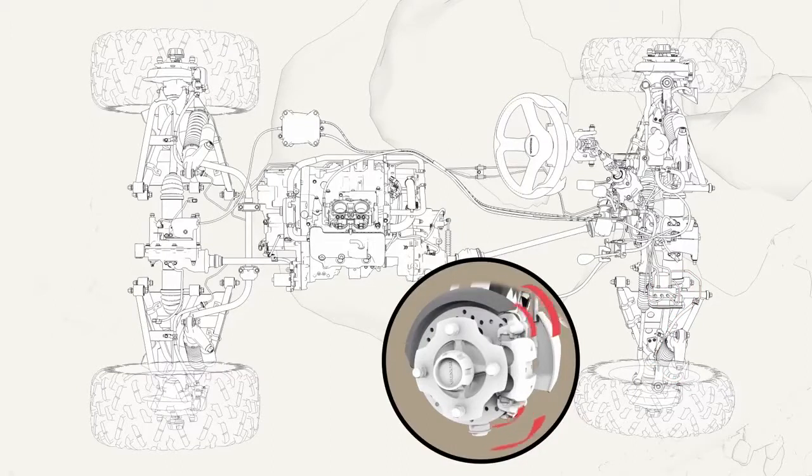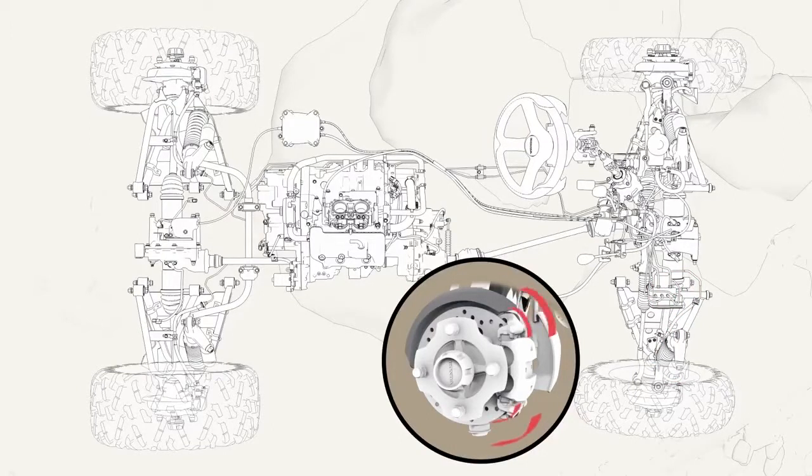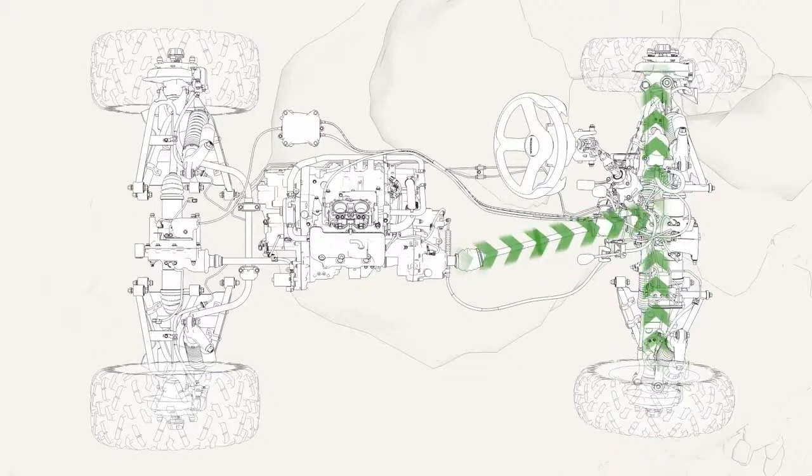The torque-biasing, limited-slip front differential mechanically multiplies the brake force 3.92 times and delivers it as drive force to the wheel with more grip.